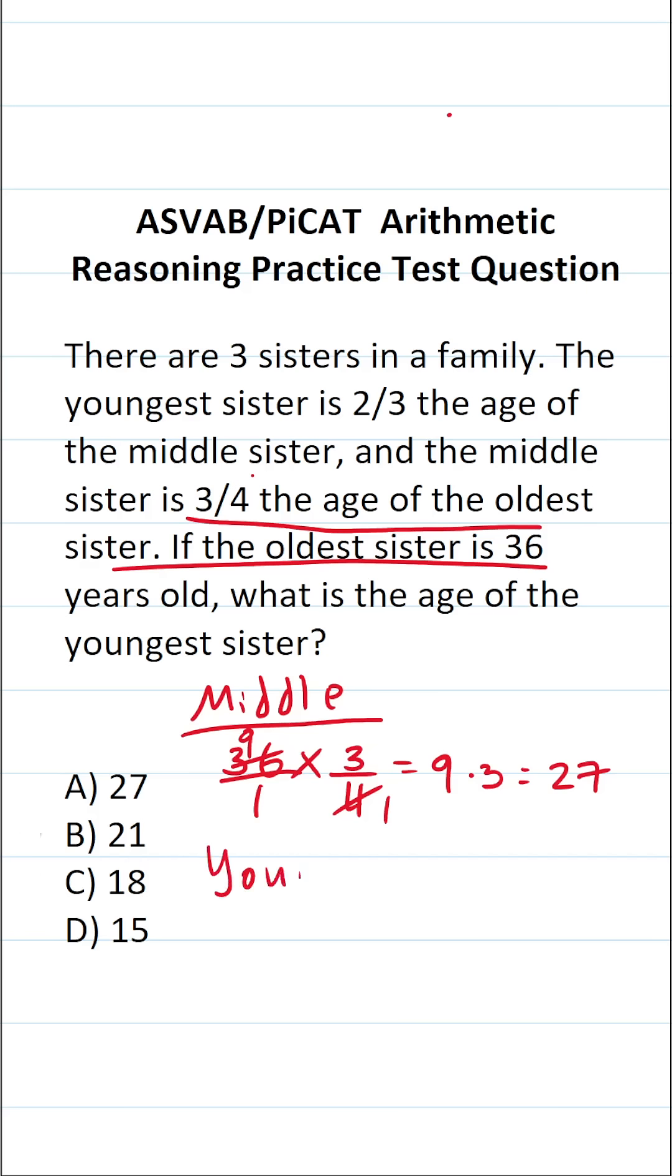Now let's work back one more step to find the age of the youngest sister. The youngest sister is two-thirds the age of the middle sister. We know the middle sister is 27 years old, so we're going to find two-thirds of 27. As we did previously, we're going to make this easier by placing 27 over 1. This enables us to cross-reduce.